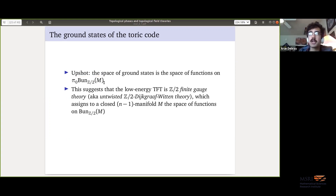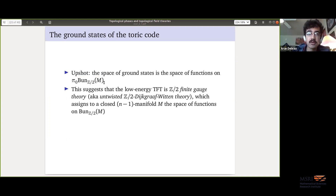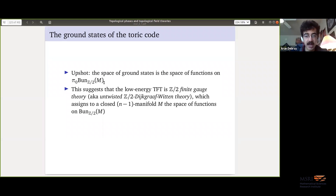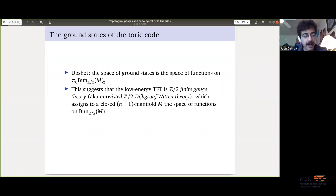Something kind of magical happened, which is important: we started with something that manifestly depends on the lattice — we needed the trivialization, so we needed to know at least the set of vertices. But when we pass to the space of ground states, we get a topological invariant that only depends on the underlying manifold, not its triangulation. This is the kind of behavior you should expect from topological phases. One reason we don't think fractons are topological is precisely that they don't have this behavior — their space of ground states knows things about the lattice.